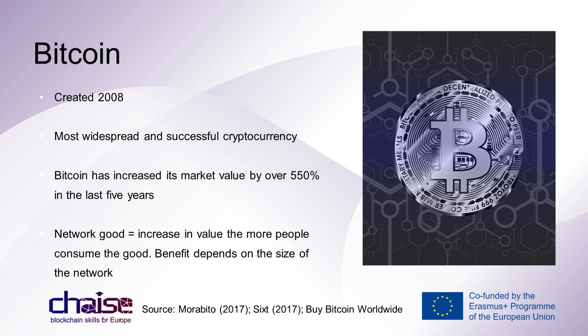The Bitcoin currency is a networked good controlled by supply and demand. Networked goods are characterized by increasing in value the more people consume them, so the actual benefit depends on the size of the network. The value of Bitcoin can fall and rise as quickly as shares and is sensitive to press releases and media reports. How successful the currency becomes thus depends on the acceptance of the broad masses.